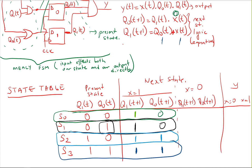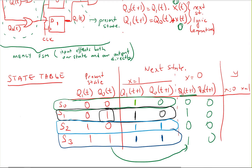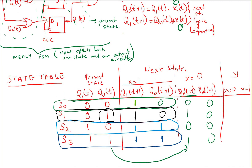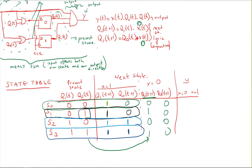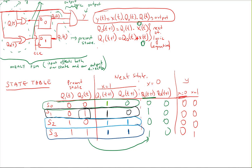For x=0, q0(t+1) = q1(t) AND 0 = 0 for all states. For q1(t+1) = q0(t) OR 0 = q0(t), so the q1 next state column is just 0, 1, 0, 1 (copying q0 values). For the output y(t) = x(t) AND q0(t) AND q1(t): when x=0, output is always 0; when x=1, output is 0, 0, 0, 1 for s0 through s3 respectively. This completes the state table.